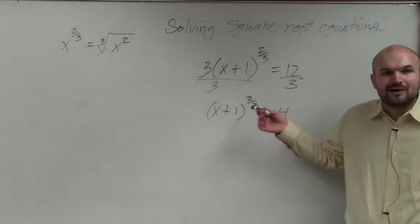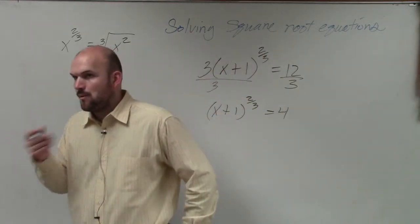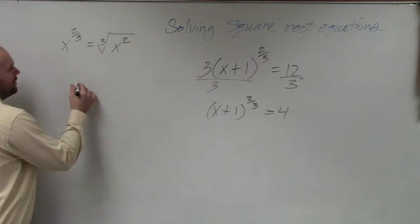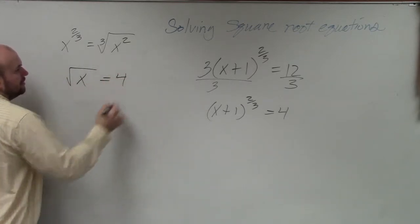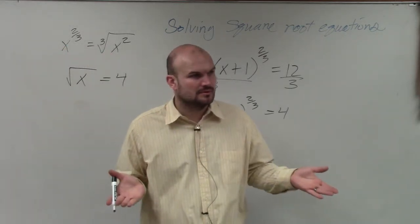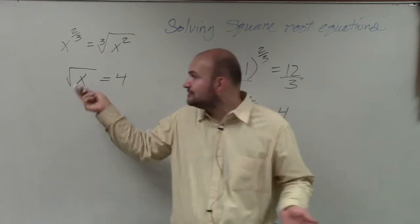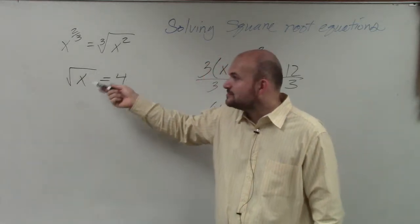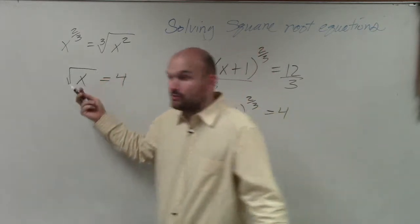Now, how do I get rid of raising something to the 2/3rds? Well, you guys remember, to get rid of the square root, what did we do? What did we do to get rid of the square root? Not so much multiply by 2, but it's similar. Square. You raise it to the power. You square it. So you're going to raise it to the power of 2, right?